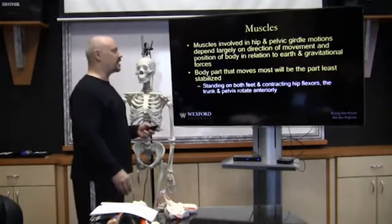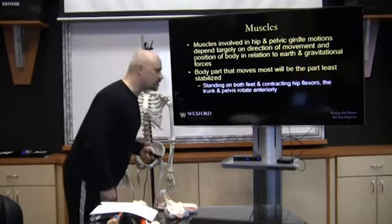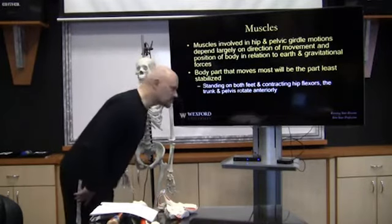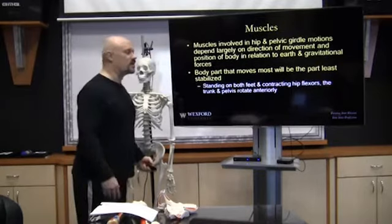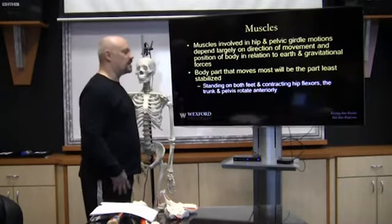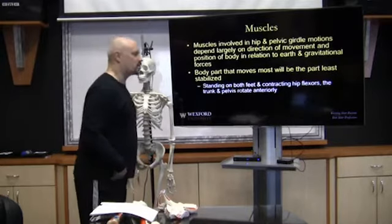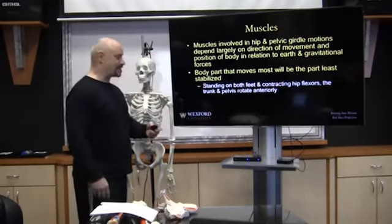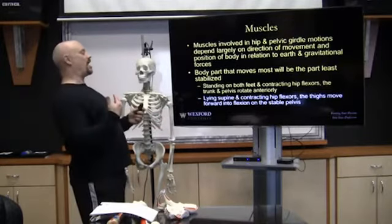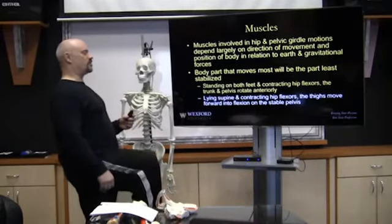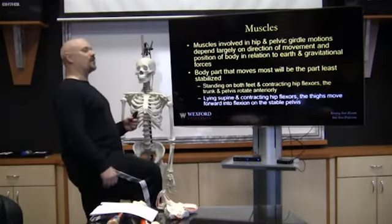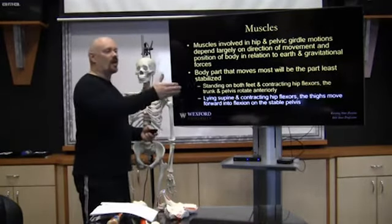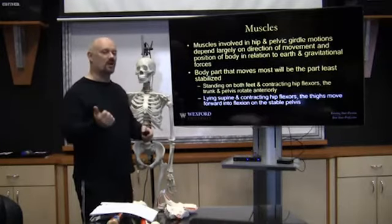Standing on both feet and contracting the hip flexors causes the trunk and pelvis to rotate anteriorly. When we contract the hip flexors with feet fixed, they shorten and pull the pelvis. Those are the agonists; on the backside are the antagonistic muscles. If we lie supine and contract the hip flexors, the thighs move forward in flexion on the stable pelvis. We have to look at where we are in space and time, what muscles are being worked, and what muscles are working to either oppose gravity or go with it.